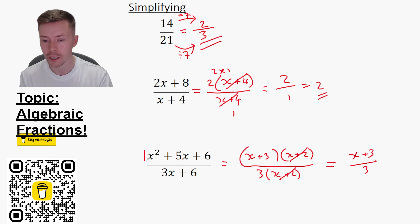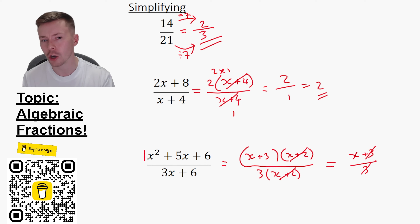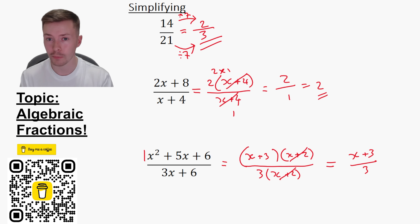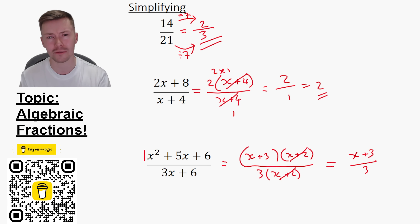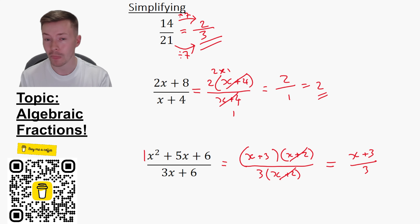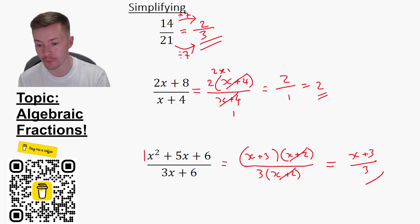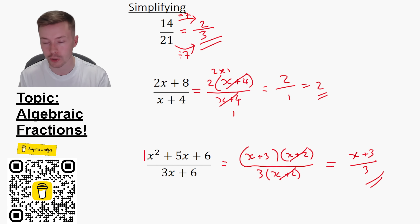You can't simplify that any further. Some people think wrongly that you can cancel a three with a three from X plus three over three — you can't do that. You can only cancel things top and bottom if you can divide the whole numerator and the whole denominator by it. I can divide three by three, but I can't divide the X by three. So the final answer is X plus three divided by three. That's a common misconception.